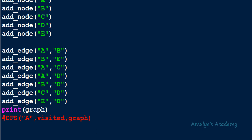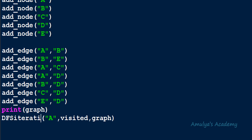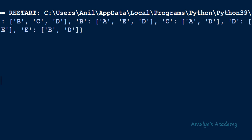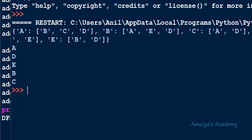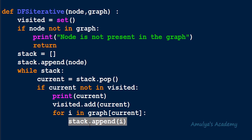Now let's call `DFS_iterative` with A as the starting node. The output is: A, D, E, B, C. Note that the stack can contain duplicate values — if you want to avoid that, you can add a condition. If you have any doubt about how this function works, the next tutorial will walk through the working with an example. Thank you for watching, don't forget to subscribe, take care and be safe.